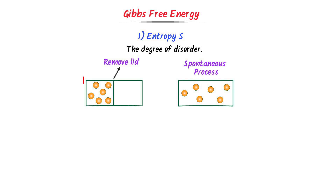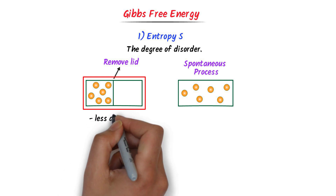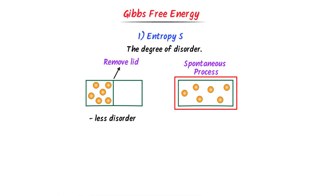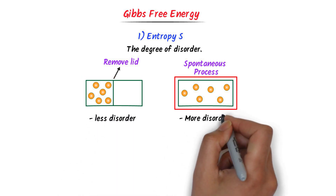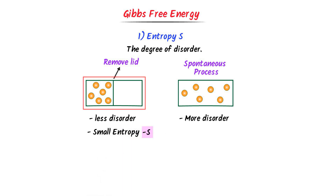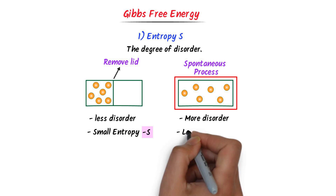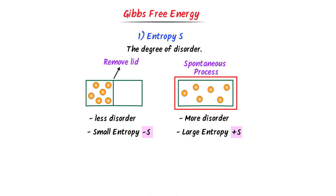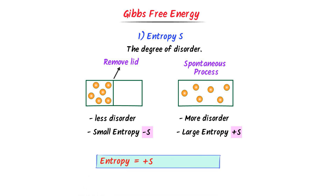Secondly, we can see that in this container the particles are less disordered, while in this container the particles are more disordered. We already know that entropy measures the degree of disorder. Here, the degree of disorder is small, hence its entropy S is also small. While in this case, the degree of disorder is high, hence its entropy S is also high or positive. To conclude, if entropy is increasing or positive, it is a spontaneous process.